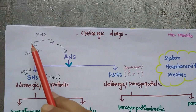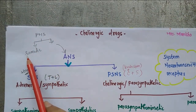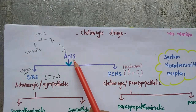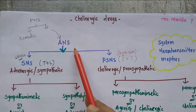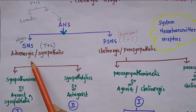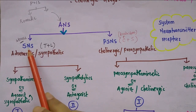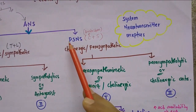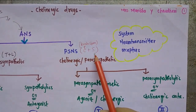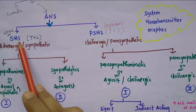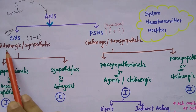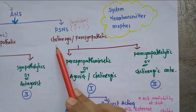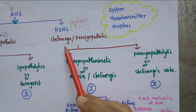PNS is divided into somatic nervous system and ANS, autonomic nervous system. This ANS is further subdivided into two systems: first is sympathetic nervous system (SNS) and the other is PSNS, that is parasympathetic nervous system. Sympathetic nervous system is also known as adrenergic system and parasympathetic system is also known as cholinergic system.